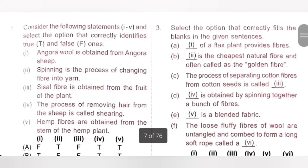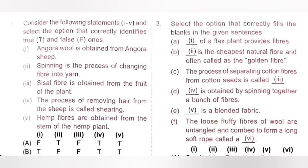First question: Consider the following statements 1 to 5 and select the option that correctly identifies true and false ones. Statement 1: Angora wool is obtained from angora sheep. This is False — angora wool is actually obtained from angora rabbit.